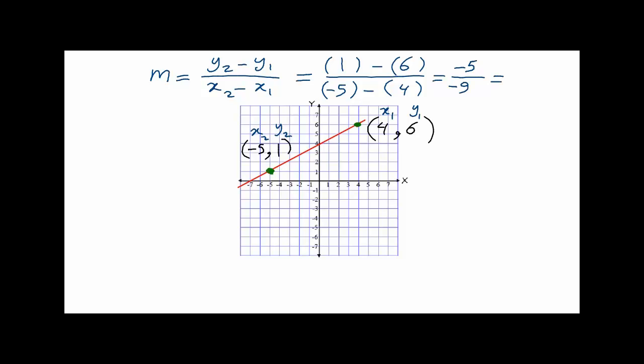Negative over negative gives us positive 5 over 9. Notice that we have an increasing line, and an increasing line has a positive slope.